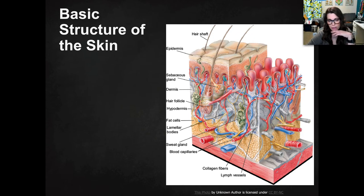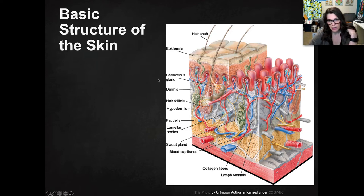The basic structure of skin is shown in this image, which will be available to you on Canvas. You can see the epidermis and then the dermis, and you can see where the blood vessels and all the different glands are. Down at the bottom, you've got your connective tissue.